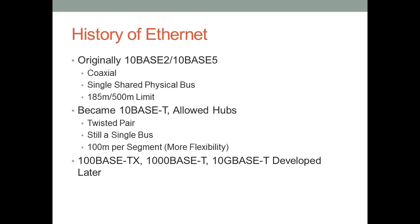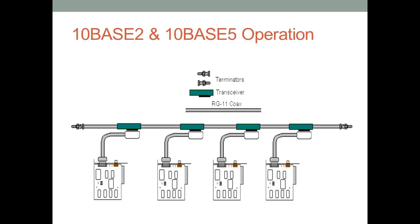Later we saw 100BaseTX, known as Fast Ethernet, and 1000BaseT, known as Gigabit Ethernet. We've also seen 10GBase-T, 10 Gigabit Ethernet, which is still a developing technology, and there are even higher-level technologies now for 100 Gigabit Ethernet.